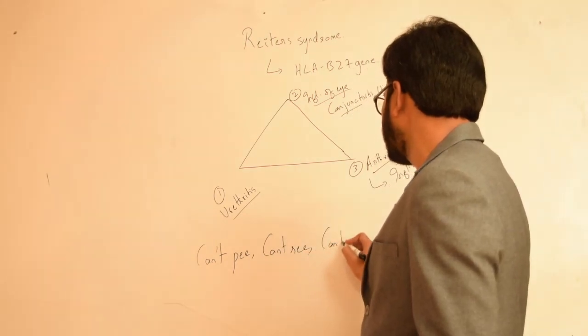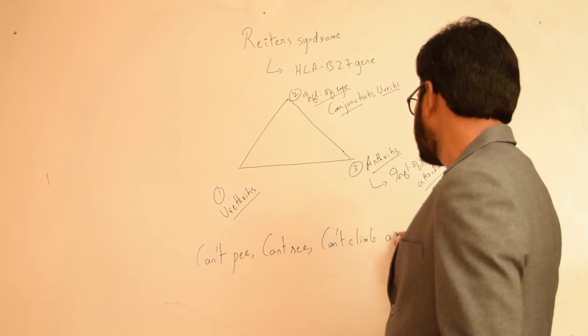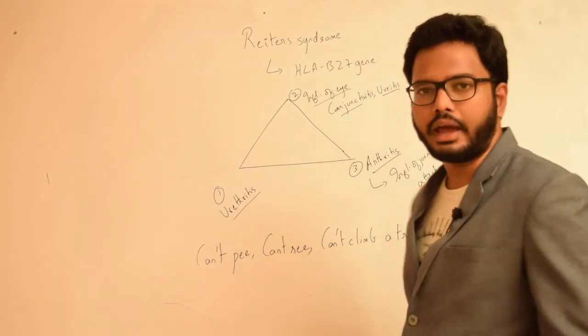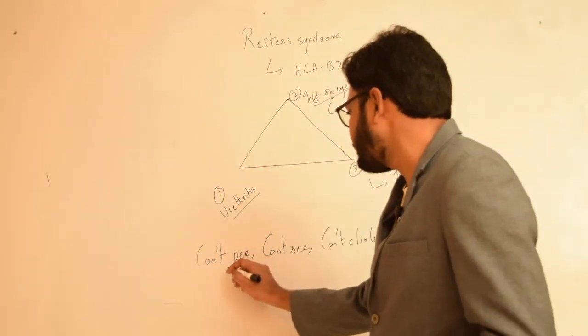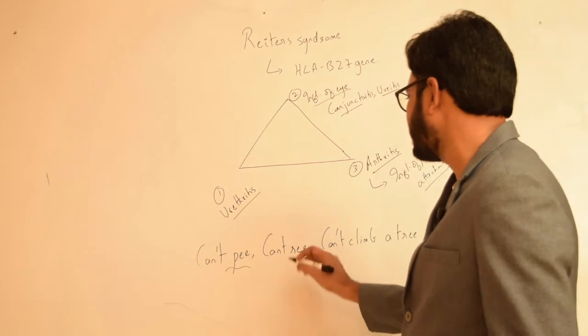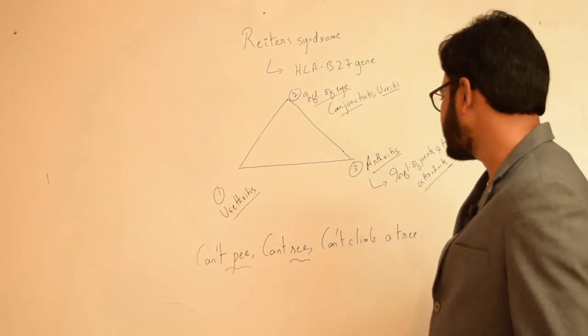So if you remember this line it will be easier for you to recollect the clinical symptoms. Can't pee because of urethritis, can't see because of inflammation of eye conjunctivitis as well as uveitis,